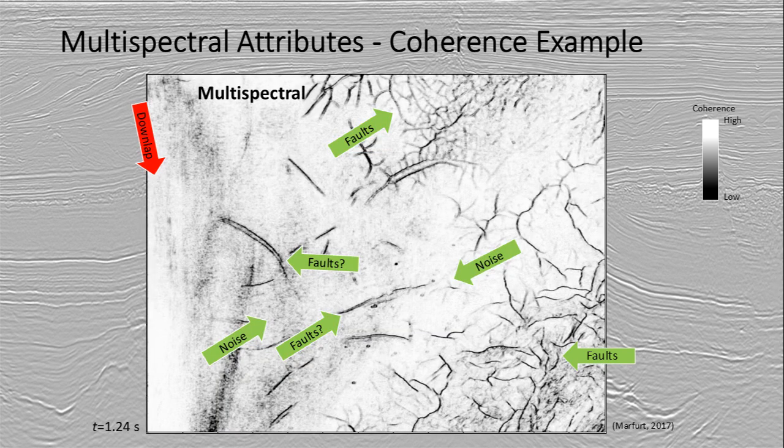In this example we're seeing the multi-spectral coherence example, where we've combined several different frequency bands in order to get a much sharper and much clearer image of the faults in this seismic volume.